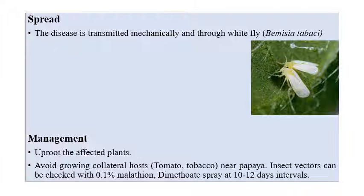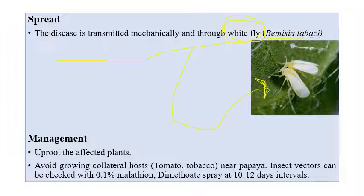Leaf curl disease can be mechanically transmitted and is also spread by whitefly — the species Bemisia tabaci. Coming to management: uproot the affected plants, avoid collateral hosts such as tomato or tobacco near papaya cultivation, and to control insect vectors, spray 0.1% Malathion or Dimethoate at 10 to 12 day intervals.